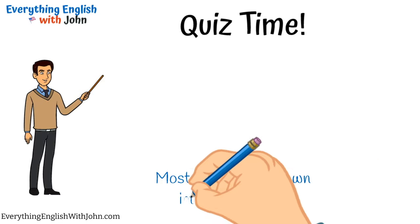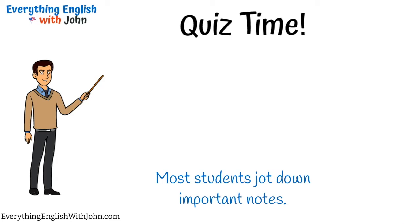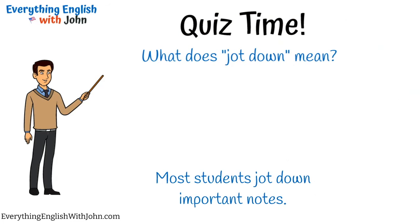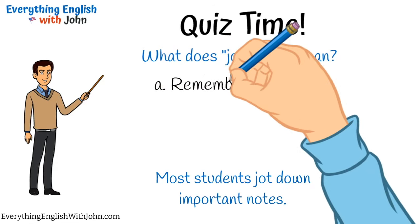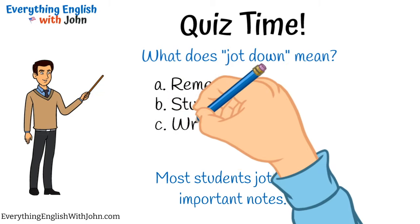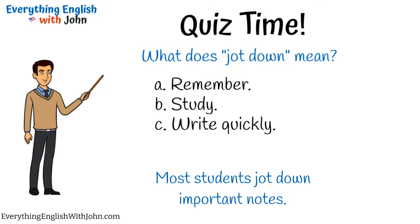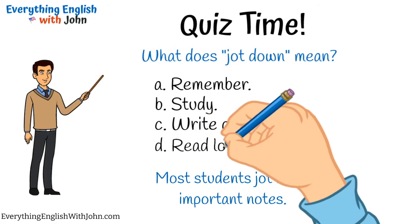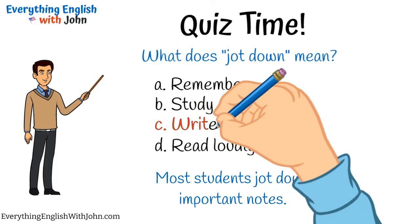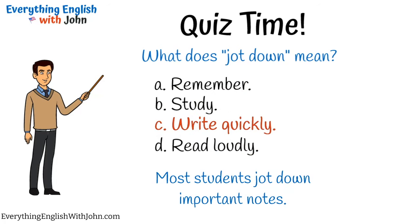Most students jot down important notes. What does 'jot down' mean? A: Remember. B: Study. C: Write quickly. D: Read loudly. That's right, it's C — Write quickly.